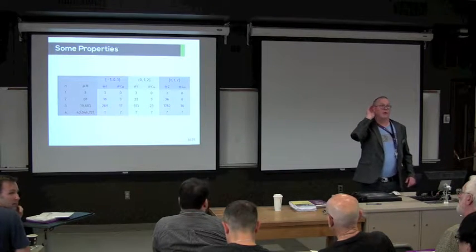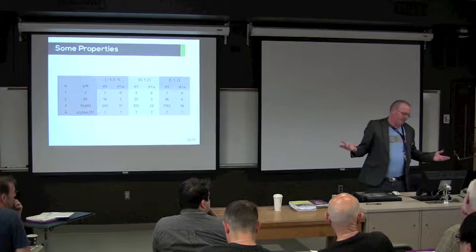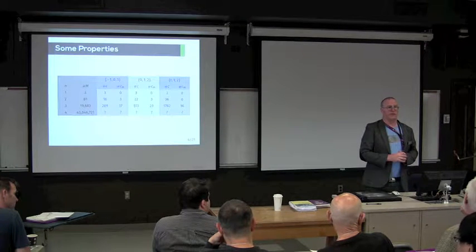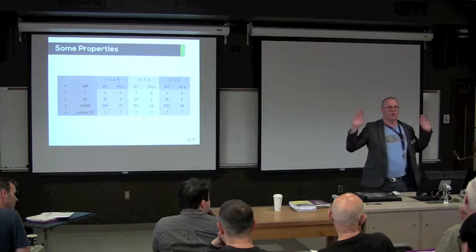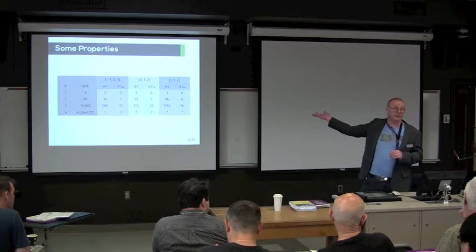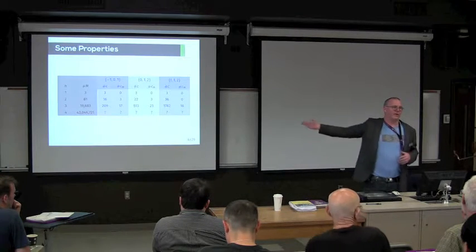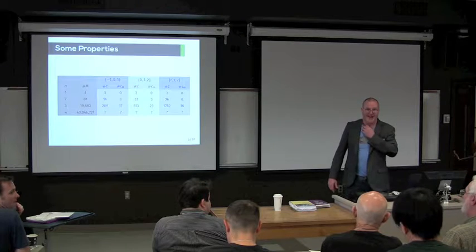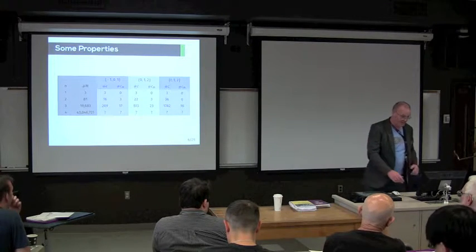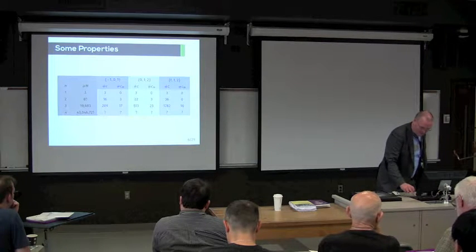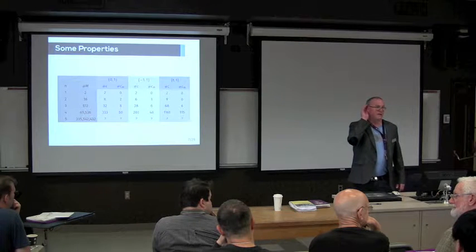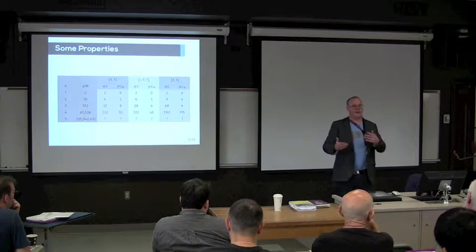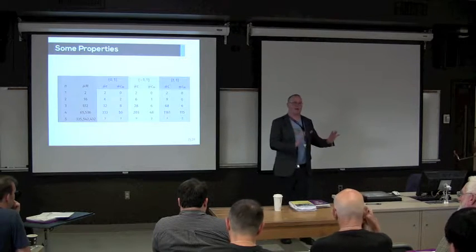Audience: '43 million doesn't seem that big — wouldn't it be not that hard to compute them all?' 43 million is not that hard, yes. My student said he has a C++ program and could do that tomorrow. I only recently started counting these things — I thought it would be a good idea for the talk. We could probably get up to 5.5 billion as well. I want to know where these numbers come from. If you take symmetries into the counting it would probably help by reducing cases, but the bookkeeping is complex — I'm happier letting the computer do the work.